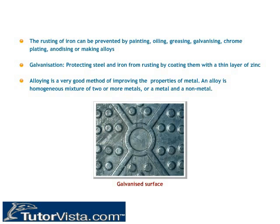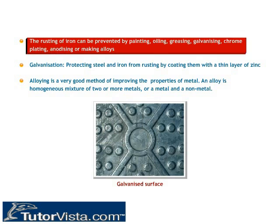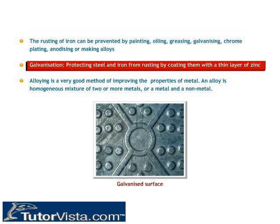Prevention of corrosion: The rusting of iron can be prevented by painting, oiling, greasing, galvanizing, chrome plating, anodizing, or making alloys. Galvanization is a method of protecting steel and iron from rusting by coating them with a thin layer of zinc.